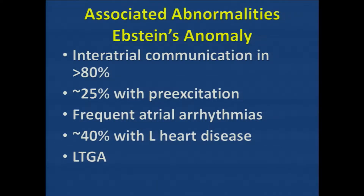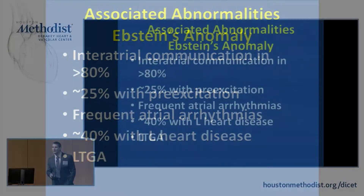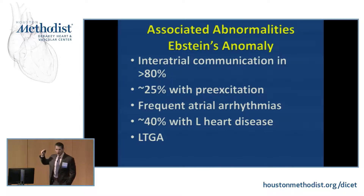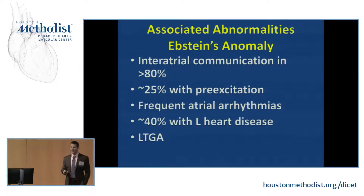Associated abnormalities include an interatrial communication, most commonly a patent foramen ovale. This is relevant because severe tricuspid valve regurgitation increases right atrial pressures, and in the presence of an atrial septal defect, that can lead to right-to-left shunting and cyanosis.